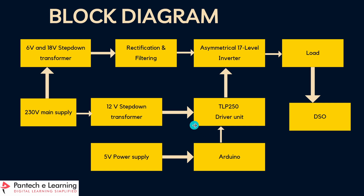For the TLP250 driver board, we need a 12V power supply, so we are using a 12V step-down transformer. For the main circuit, we will use 2 transformers, V1 and V2, in a 3:1 ratio. V1 should be 18V and V2 should be 6V. According to that ratio, we can apply the voltage to the main circuit.